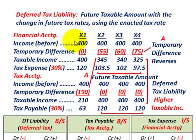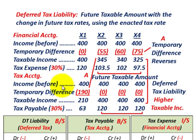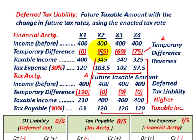Starting out with our deferred tax liability, we're going to be looking at one temporary difference between our financial accounting — our book accounting — and our tax accounting. For tax accounting, it's $190,000 and it's deductible in the first year, whereas with financial accounting it isn't deductible until the next three years. This is where this temporary difference is going to reverse itself.